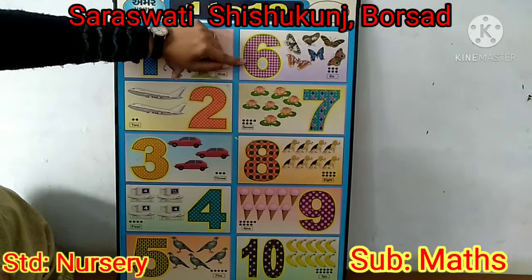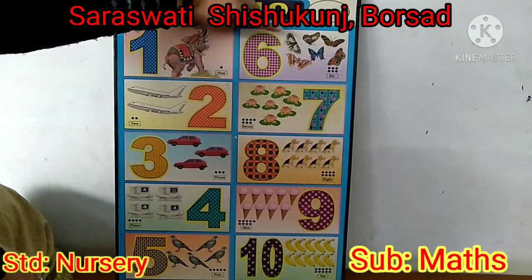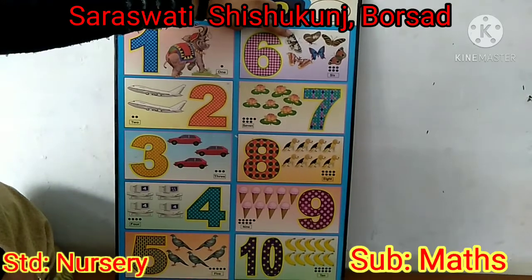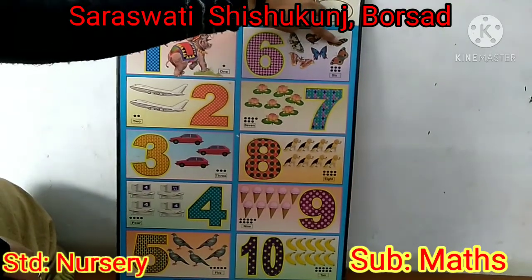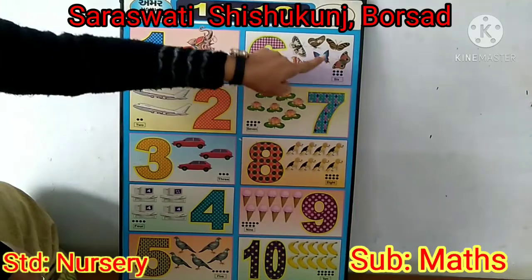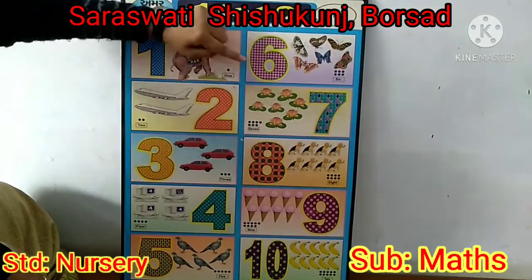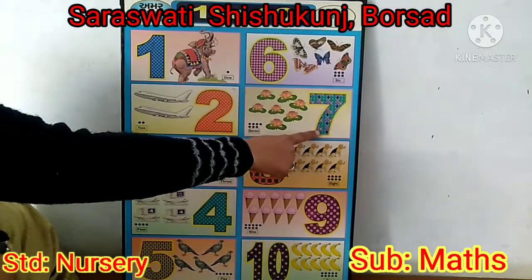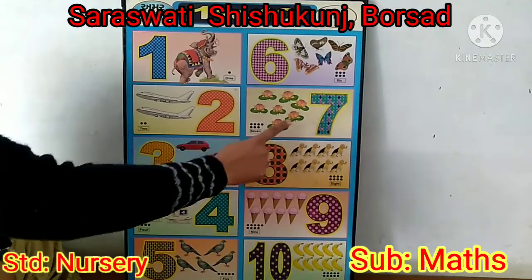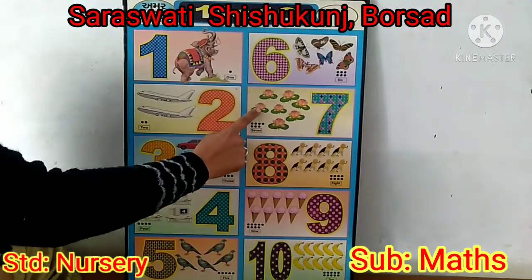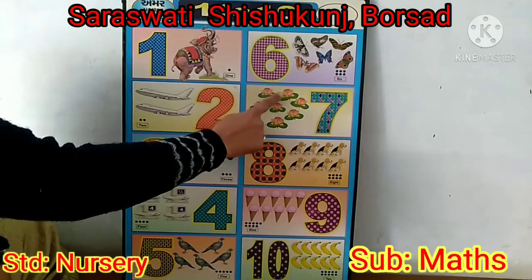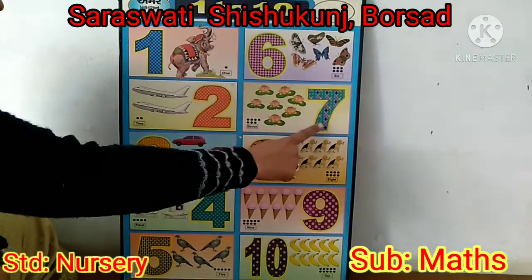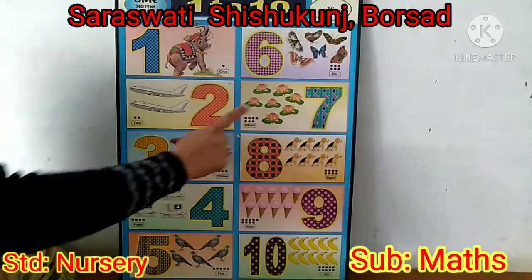And this one? Number 6. So how many butterflies? Count with me. 1, 2, 3, 4, 5, 6. Number 6, 6 butterflies. And this one? Number 7. So count with me, how many lotus? 1, 2, 3, 4, 5, 6, 7. Number 7, 7 lotus.